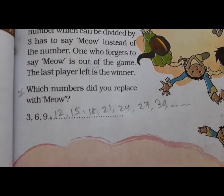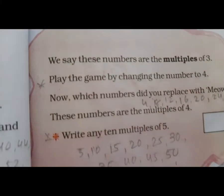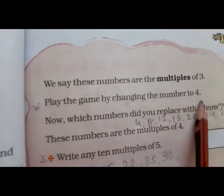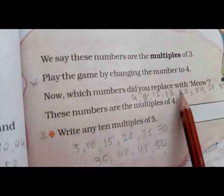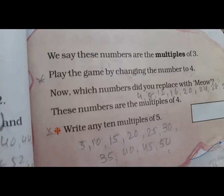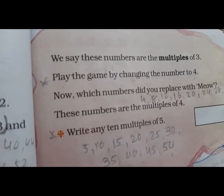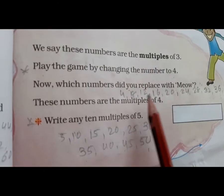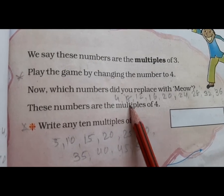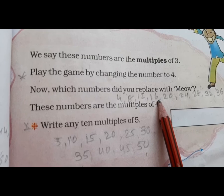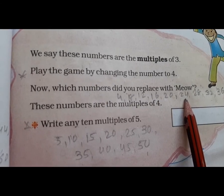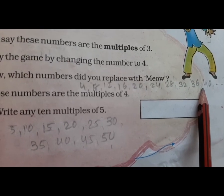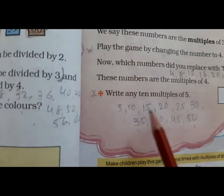Okay, now play the game by changing the number to 4. Which numbers did you replace with meow? Now take multiples of 4: 4 ones are 4, 4 twos are 8, 4 threes are 12, 4 fours are 16, 4 fives are 20, 4 sixes are 24, 4 sevens are 28, 4 eights are 32, 4 nines are 36, 4 tens are 40.